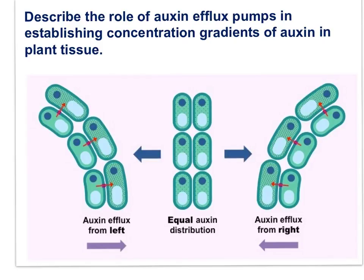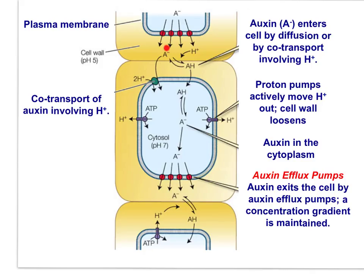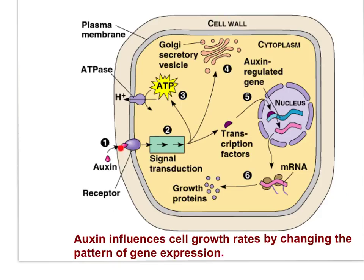Auxin efflux pumps establish concentration gradients of auxin in plant tissue. Auxin changes the pattern of gene expression and stimulates the pumping of hydrogen ions out of cells. Auxin is received by a receptor, and the arrival of auxin stimulates the production of growth proteins. Auxin influences cell growth rates by changing the pattern of gene expression. The arrival of auxin also results in more active pumping of hydrogen ions out of the cell.